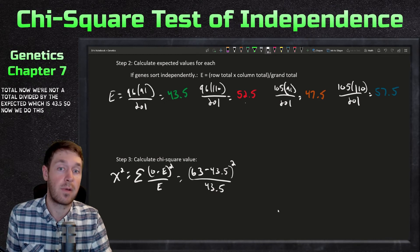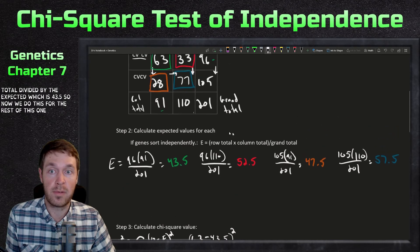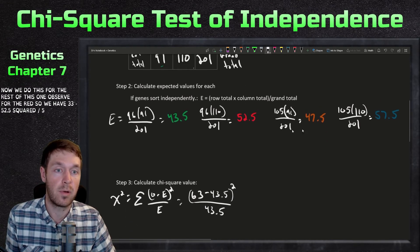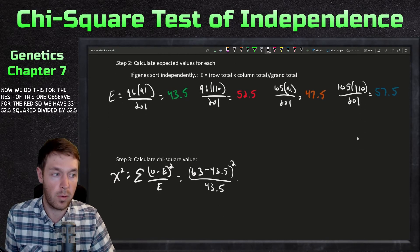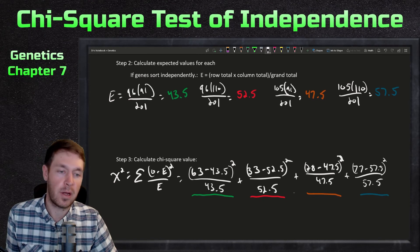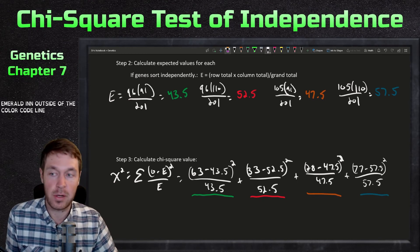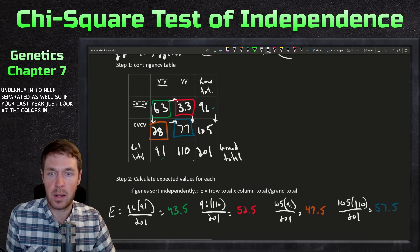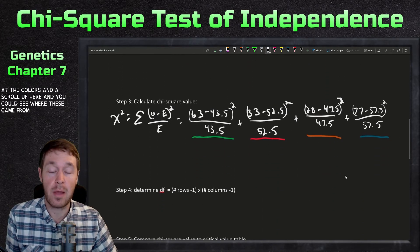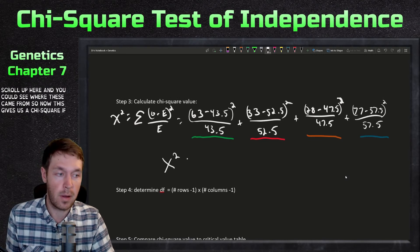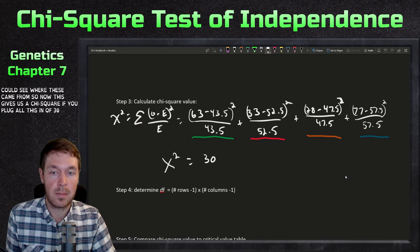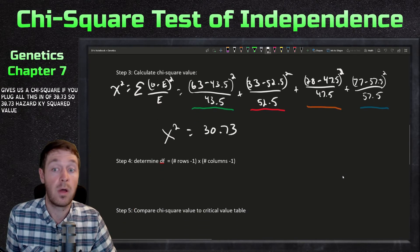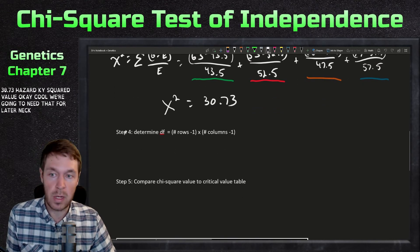For the red cell: observed is 33, minus expected 52.5, squared divided by 52.5. We do that for all four cells. I've also added color-coded lines underneath to help separate them. If you're lost, just look at the colors and scroll up to the contingency table to see where these values came from. Plugging all of this in gives us a chi-square value of 30.73.